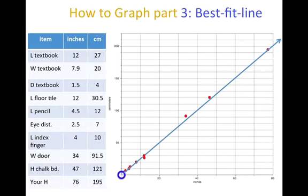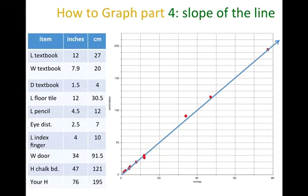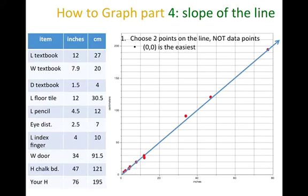We've scaled up, we've plotted the points, we've drawn the best possible straight line we can through our points, usually starting at zero. Now we need to calculate the slope of the line because the slope of the line tells us something. In this case, if you remember, it tells us what the conversion is between centimeters and inches. We're going to choose two points on the line. We never choose data points and it doesn't matter which two points you choose. If the line is straight, the slope is going to be the same no matter where you choose the points.